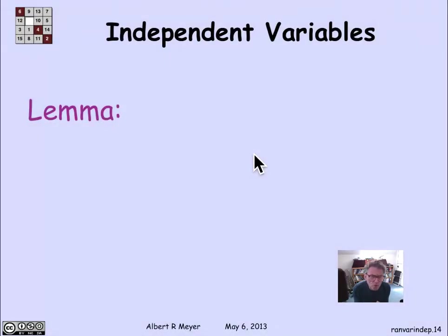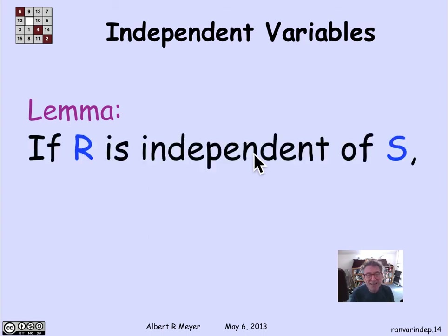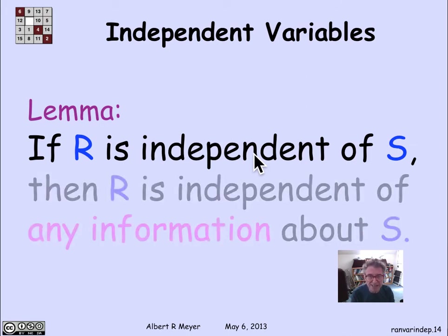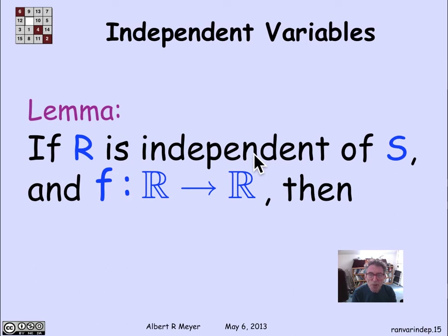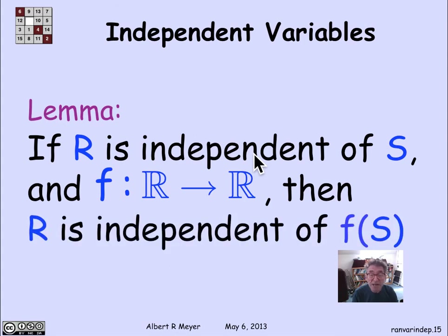With independent events, if A was independent of B, it really meant A was independent of everything about B — in particular, independent of the complement of B as well. A similar property holds for random variables. Intuitively, if R is independent of S, then R is really independent of any information at all about S. More precisely, pick an arbitrary total function f mapping R to R. We can think of f as giving some information about the value of S. So if R is independent of S, then R is independent of f(S) — any transformation of S by a fixed non-random function.